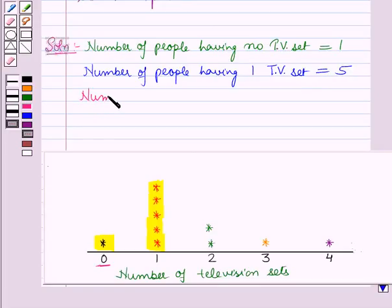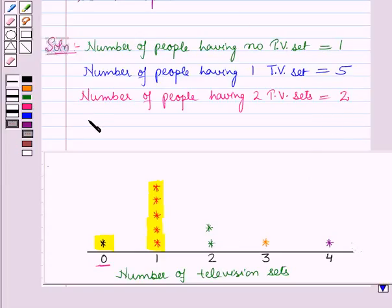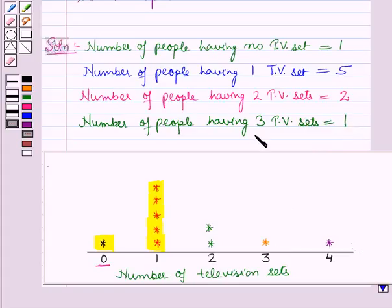The number of people having 2 TV sets is 1. From the graph we can see the number of people having 3 television sets is 1, and the number of people having 4 television sets is also 1.